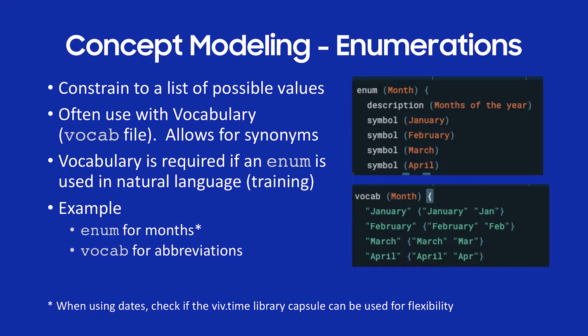Oftentimes when you're using enumerations, you also use what we call vocabulary. Vocabulary is how you set up synonyms. In that code snippet on the bottom right, you can see I've set up synonyms: January/Jan, February/Feb, March, etc. This sets up the ability for the user to say a synonym — if I said 'Jan,' Bixby would interpret that as January; if I said 'Feb,' Bixby would interpret that as February.